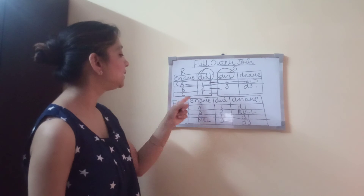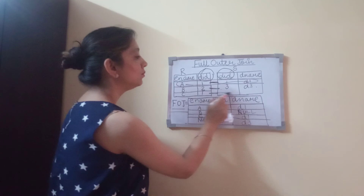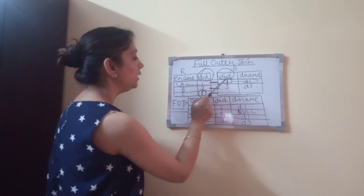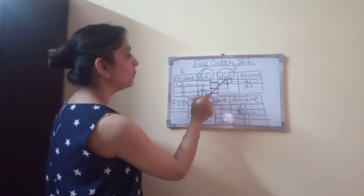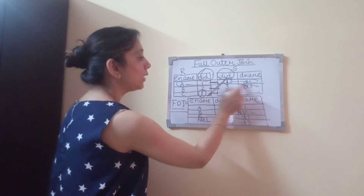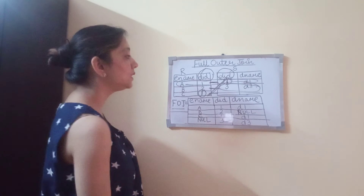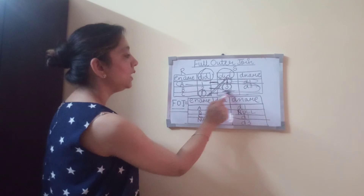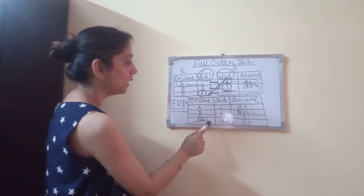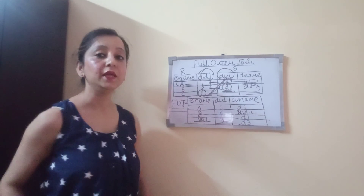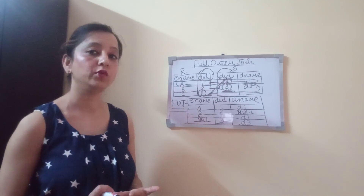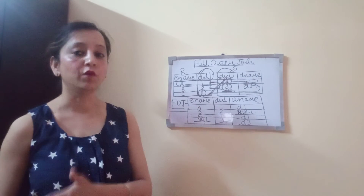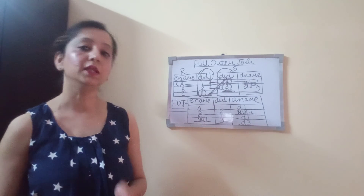Now let's move on to the third tuple, C, 1. Here the department ID is 1 in both tables, so we have matching values for the common column. We write C, 1, and the department name for department ID 1 is D1. Now let's look at the second tuple of table S. The common column value 3 has no matching value in table R, so there is no employee name for this tuple. We write NULL for employee name, then copy department ID 3 and department name D3. This is as simple as the right outer join and the left outer join — wherever there is no matching value for the common column, you write NULL, but you include all tuples from both tables in the resultant table.